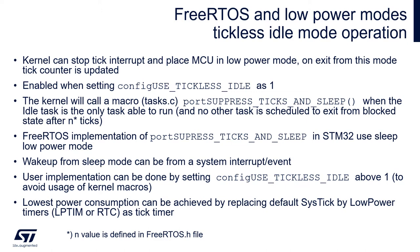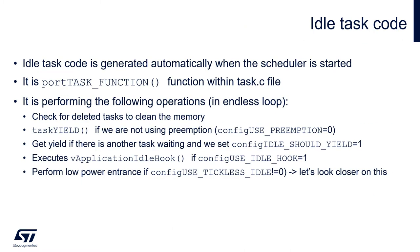Within the FreeRTOS implementation on STM32 devices, sleep mode is selected as the low power mode by default. But it is also possible to use stop mode, which will be demonstrated further within this section. Low power mode support is activated within the idle task once config_use_tickless_idle is different from zero within FreeRTOSConfig.h file and there is no other active task. It is done at the end of idle task function execution to ensure its other duties are finished.